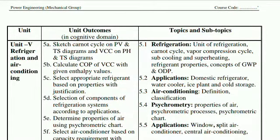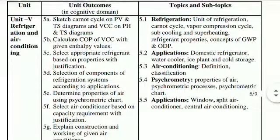The fifth unit is Refrigeration and Air Conditioning. The first point covers refrigeration: unit of refrigeration, Carnot cycle, vapor compression cycle, subcooling and superheating, refrigerant properties, and the concept of GWP and ODP.